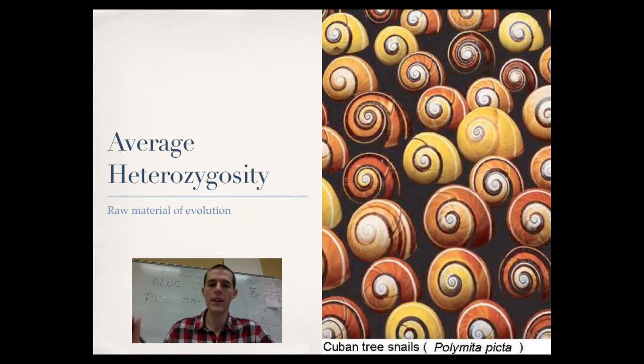All right, last thing before we get into sources of variation. We get this idea of average heterozygosity, big word, and it's the raw material for evolution. So we've talked a lot about genetics, and for any trait you can be homozygous dominant, homozygous recessive, or heterozygous. When it comes to evolution, being heterozygous is the best raw material for evolution because you've got one of the dominant traits and one of the recessive traits. If you are homozygous dominant or recessive, evolution can't really act a whole lot on that because you're just going to pass along the same dominant trait or the same recessive trait.